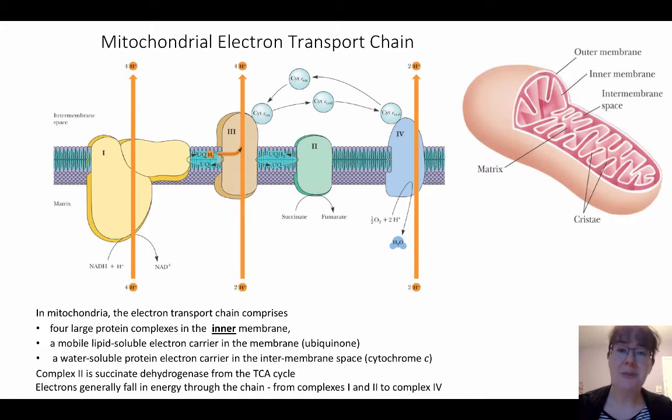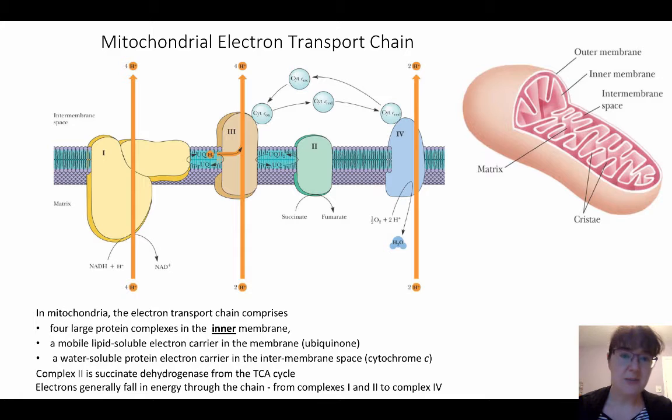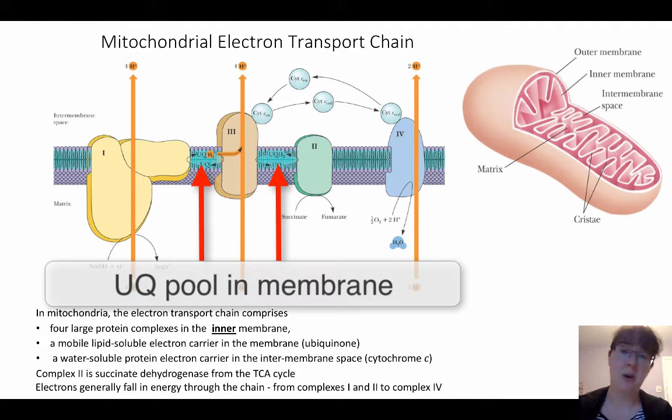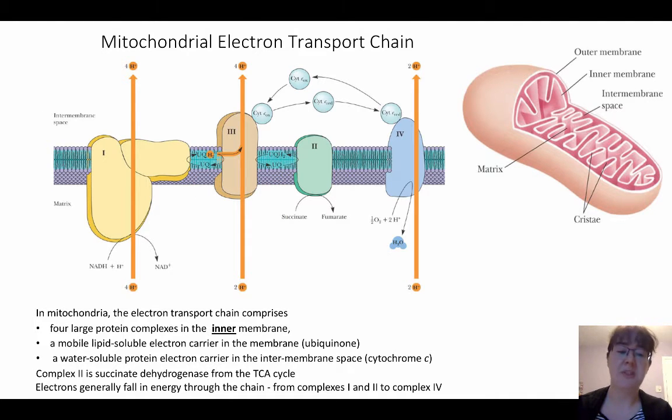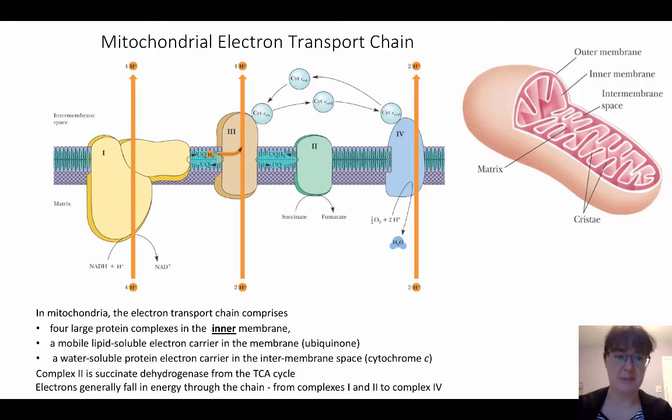These proteins are all in the inner membrane, which means they're all pumping protons from the matrix, that is the very center of the mitochondria, to the intermembrane space. Besides from these four large complexes that are all embedded in the membrane, there's also going to be a pool of ubiquinone that's going to also be a mobile electron carrier that's going to go through the lipid membrane itself. There's also going to be that protein electron carrier which is cytochrome c that's going to be going in that inner membrane space.